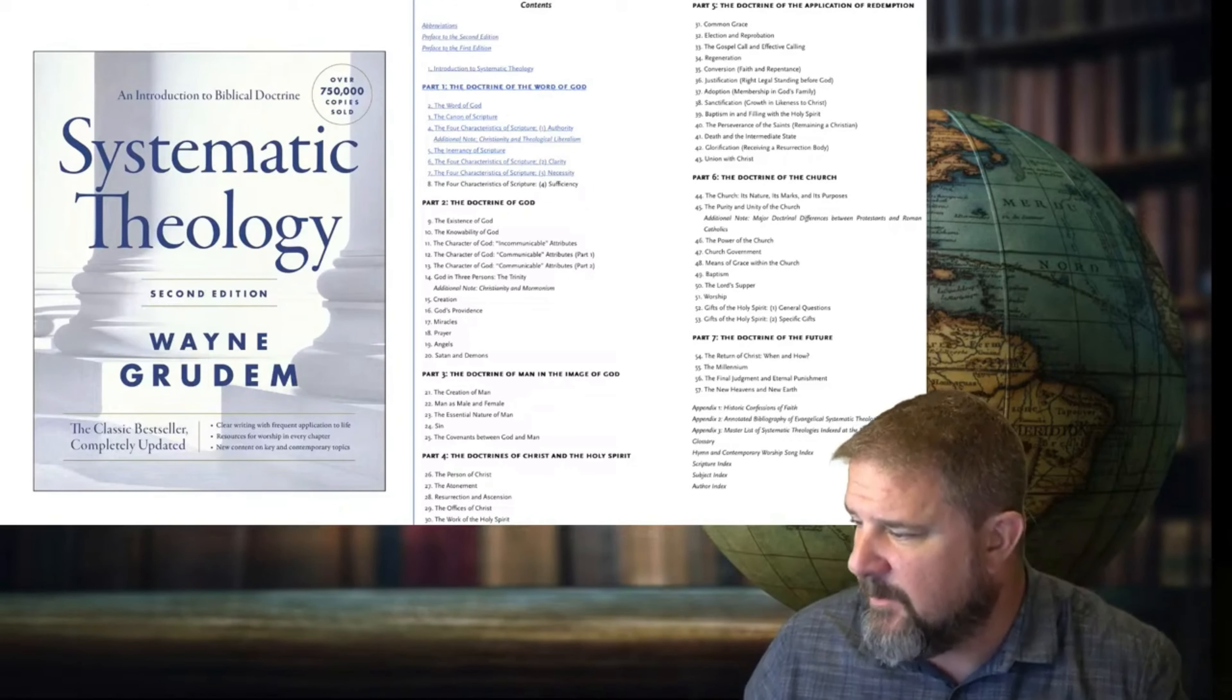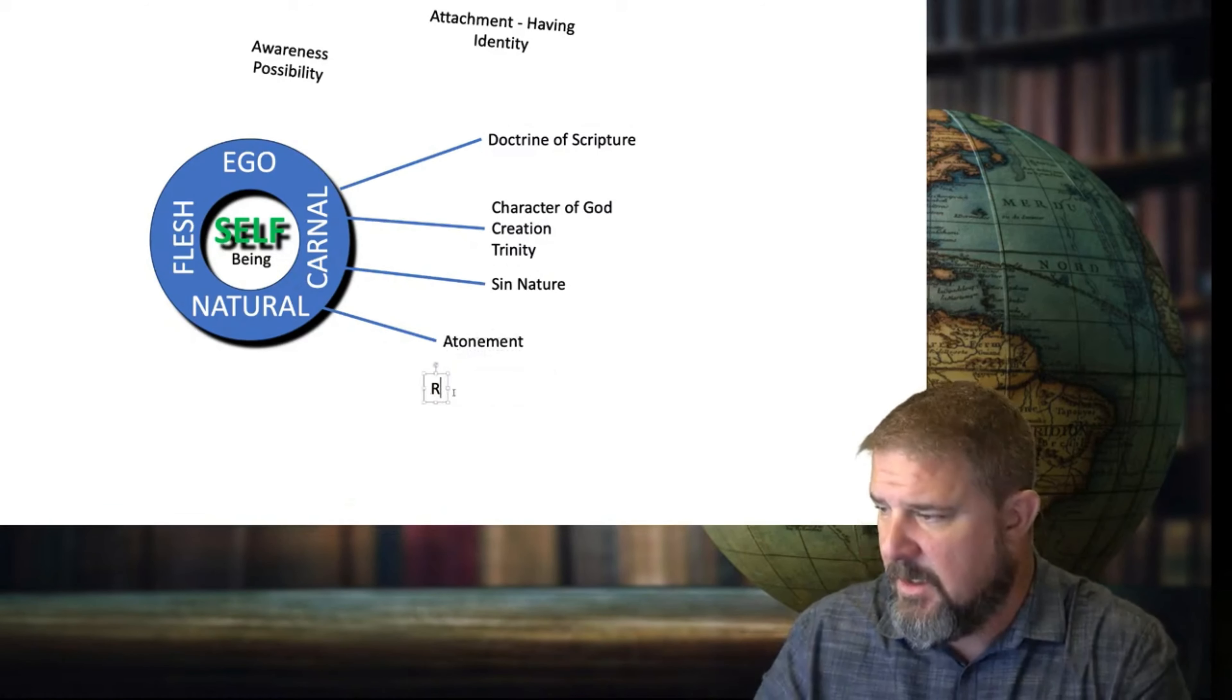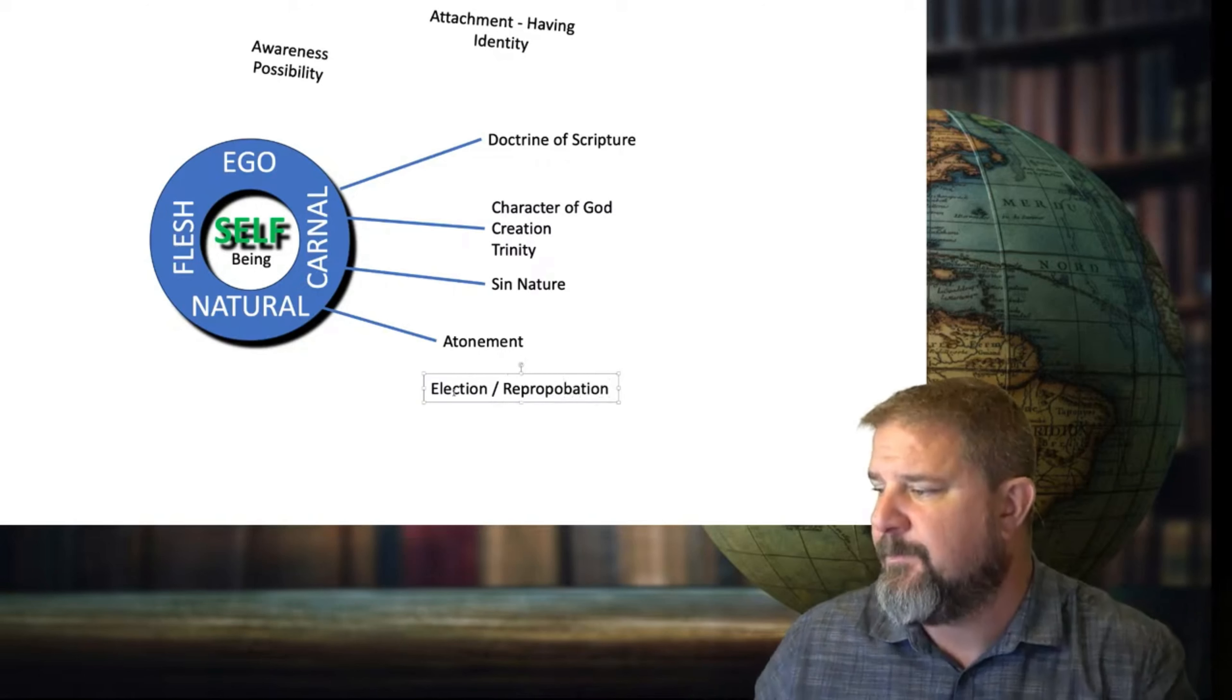What else do we have? We have covenants. We have resurrection and the offenses of Christ. We have, okay, election and reprobation. There we go. Do you have opinions about election and reprobation? That's what you get when you can't think or spell.